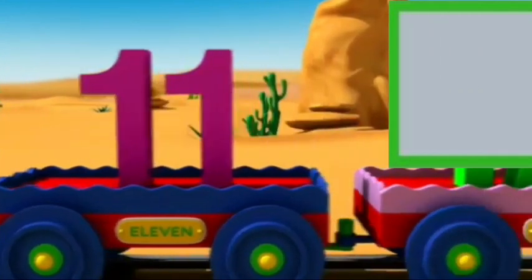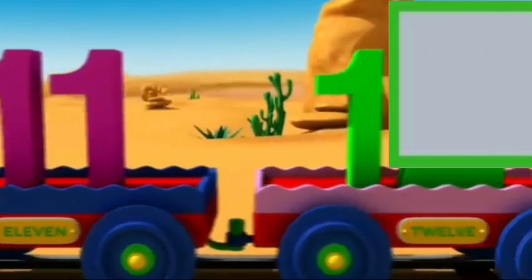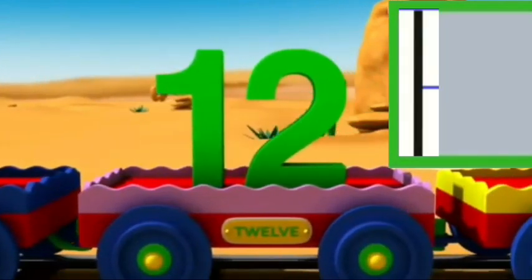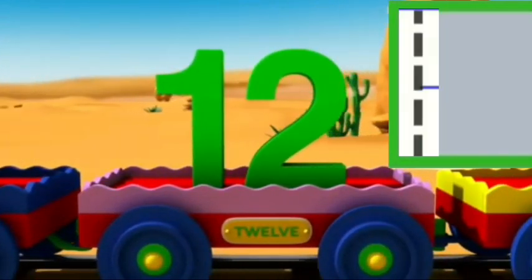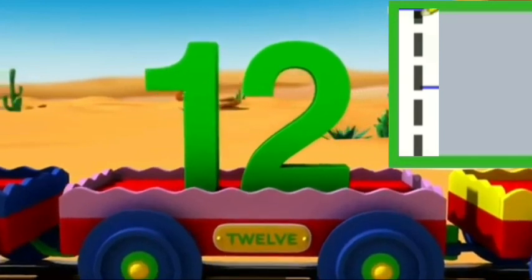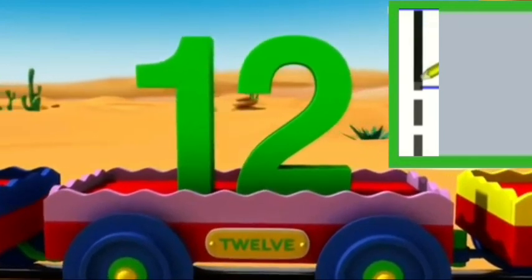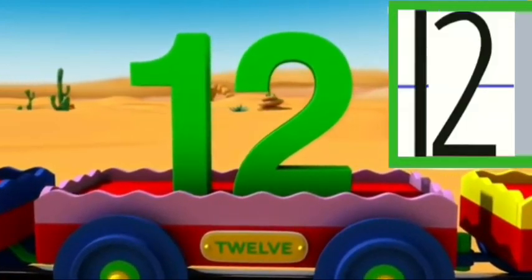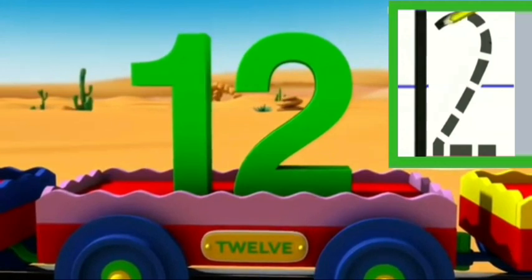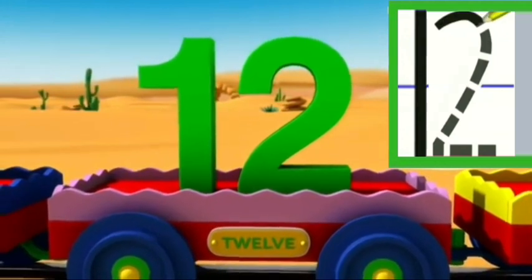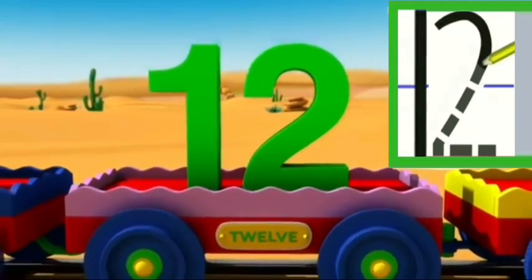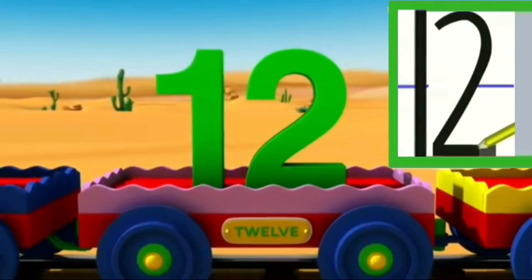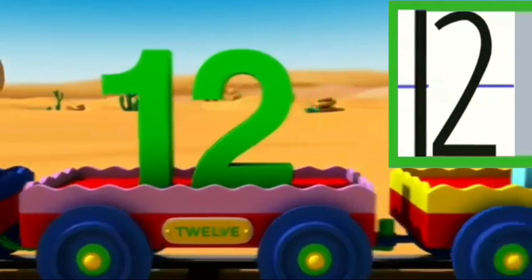To write number 12, firstly we will write number 1. Start from the top and go straight down. For 2, start from top, move to right, go round like a duck, then a straight line at bottom.